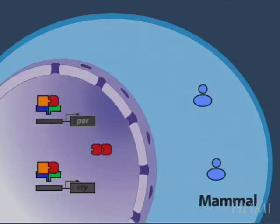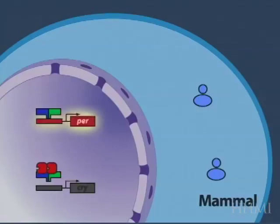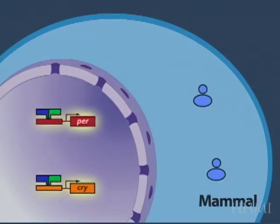Then as time progresses, these negative factors PER and cryptochrome turn over and disappear or are degraded. Then the inhibition is relieved, the activation begins, and the start of the cycle begins again.